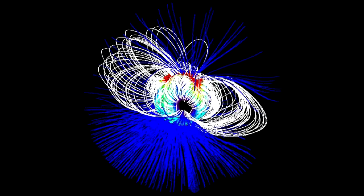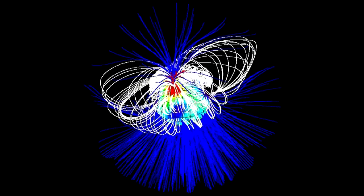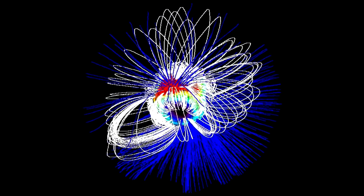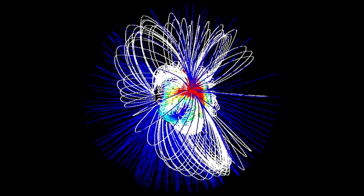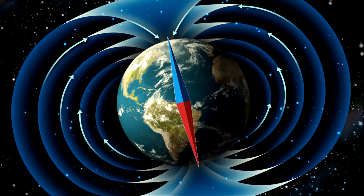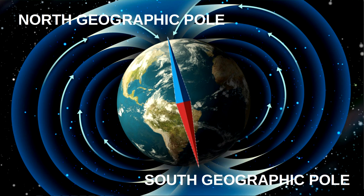To understand why this happens, it is important to look at our planet's magnetic properties. As we already mentioned, the Earth is a magnet. It has the north magnetic pole in the geographic south and the south magnetic pole in the geographic north.